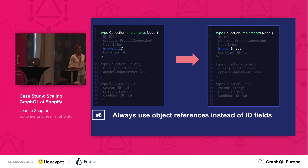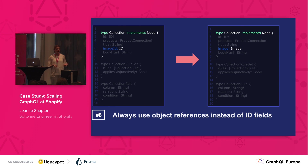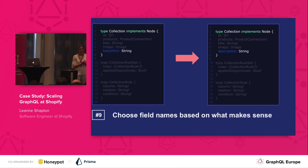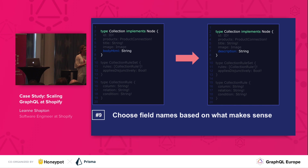Image ID: right now we're returning an image ID. This is common in REST-based APIs to return IDs to link objects together, but with GraphQL, because clients explicitly ask for each field, we don't need to do this. We can actually provide the object reference right in our field and avoid the client having to come back to the server to get what they want. So always use object references instead of ID fields. The last field in collections is body HTML — that's not a great name. What it means is that it's a body description of a collection. So let's take the opportunity to rename it to 'description.' Choose field names based on what makes sense, not a legacy API field or a column name in your database. Be really descriptive with your names.